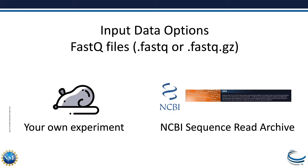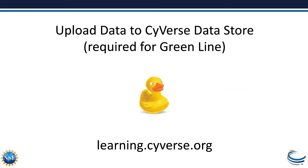You can use Greenline either with sample data or with input data that you provide from either your own experiment or from another resource, like the NCBI Sequence Read Archive. Your inputs must be in the form of FASTQ files, either .FASTQ or compressed .FASTQ.gz. If you're using Greenline with your own data, you'll need to upload that to the CyVerse Data Store. You can use a tool like Cyberduck, and detailed instructions are available at learning.cyverse.org.